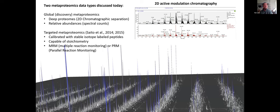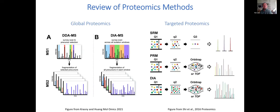We do a lot of complex chromatography in our lab that not many groups are willing or have resources to develop. We found it really helps our analyses. We do global discovery metaproteomics — deep proteomics — where spectral counts are our main unit. We also do targeted metaproteomics, which involves calibration with stable isotope-labeled peptides and is capable of producing absolute stoichiometry in femtomoles and copy numbers. This can be done with multiple reaction monitoring or PRM.